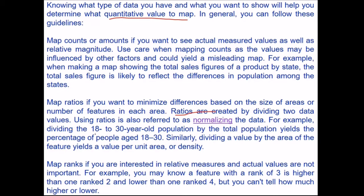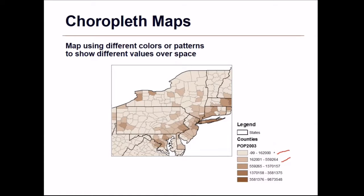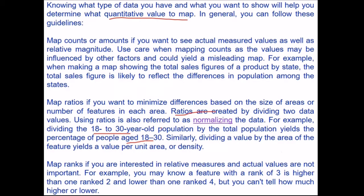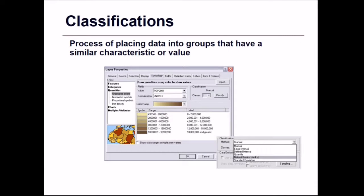For example, dividing the 18 to 30 year old population by total population yields the percentage of population aged between 18 to 30. Also, dividing a value by the area of a feature yields a value per unit area, or density — as seen here with various counties and their legends. Map ranks if you are interested in relative measures and actual values are not important. A feature ranked 3 is higher than rank 2 and lower than rank 4, but you cannot tell how much higher or lower it is.